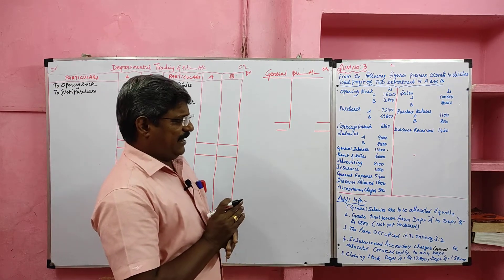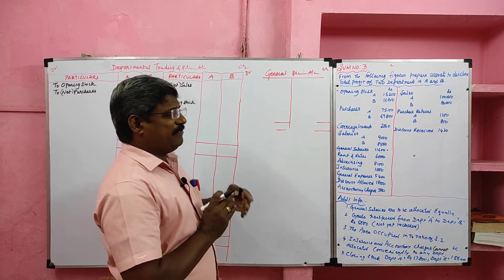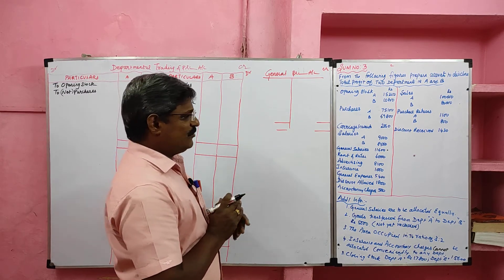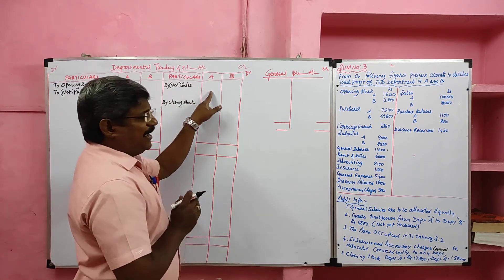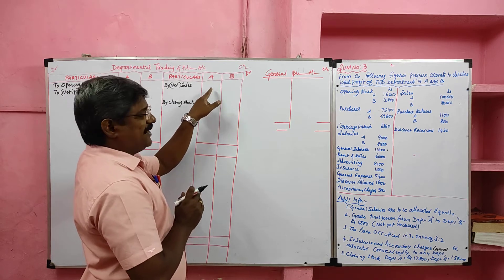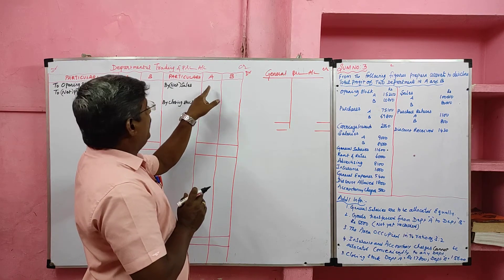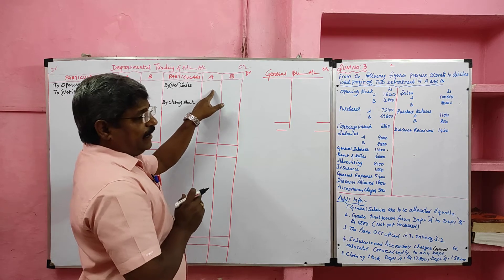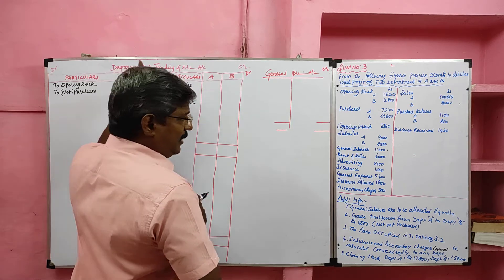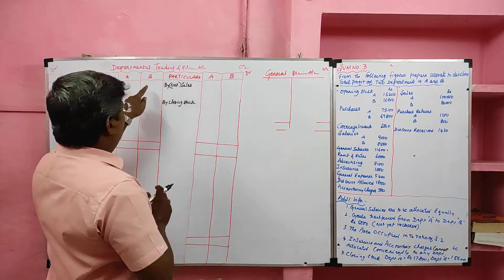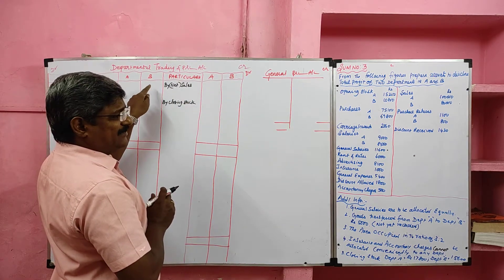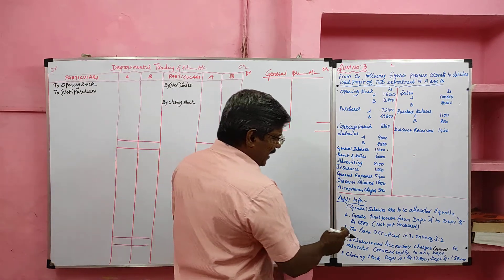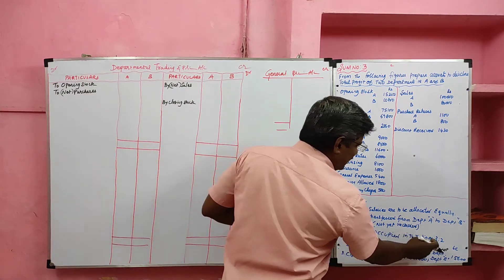For department A, it is sales. For department B, it is a purchase. So for department A, it is called the transfer department — the transfer should be credited. For department B, the transfer should be debited because it is a receiving department.